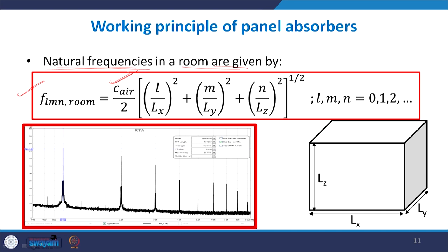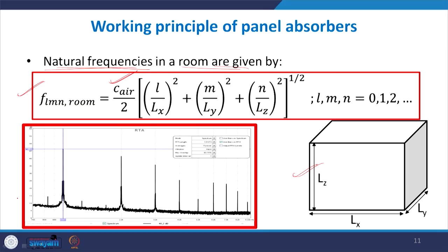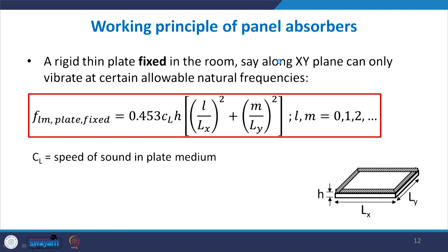The boundary condition used is that particle velocity v = 0 at x = 0 and L_x, at y = 0 and L_y, and at z = 0 and L_z — at every boundary. Solving this gives the room's natural frequencies. Similarly, a panel has its own fixed natural frequencies.